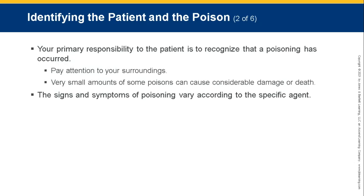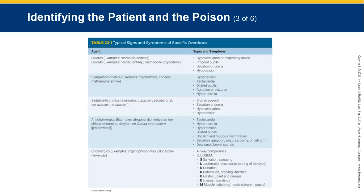Your primary responsibility to the patient is to recognize that a poisoning has occurred — pay attention to your surroundings. Very small amounts of some poisons can cause considerable damage or death. The signs and symptoms of poisoning vary according to the specific agent. There is a chart of typical signs and symptoms of specific overdoses — this is one of the most important tables in this chapter because it has the toxidromes. A toxidrome is the class that a substance falls in. The common ones you need to know are: opiates, opioids, sympathomimetics, sedative-hypnotics, anticholinergics, and cholinergics.